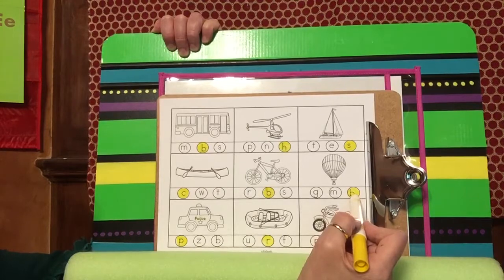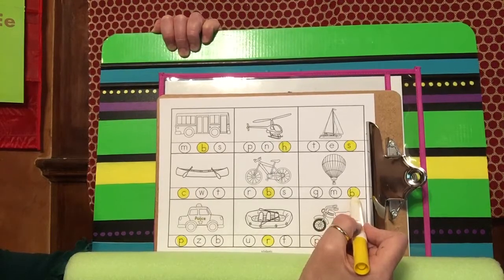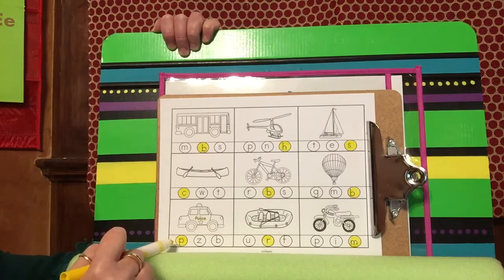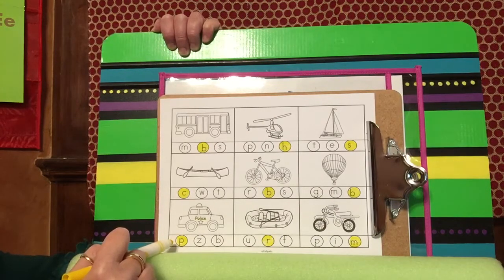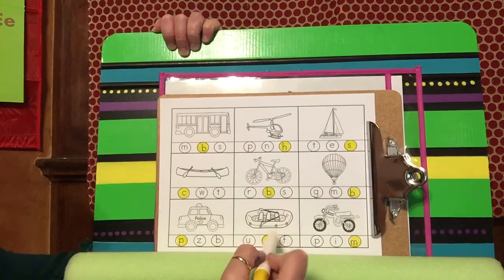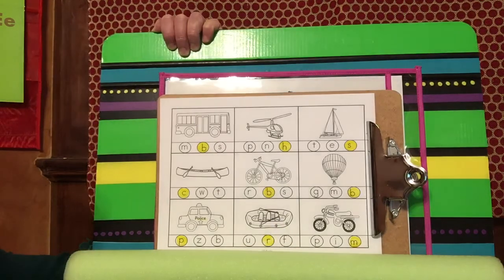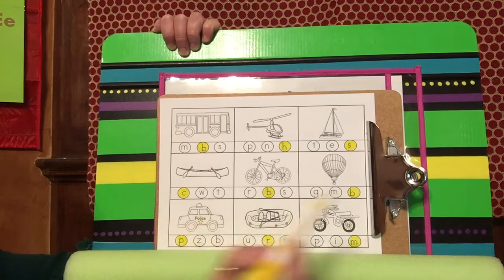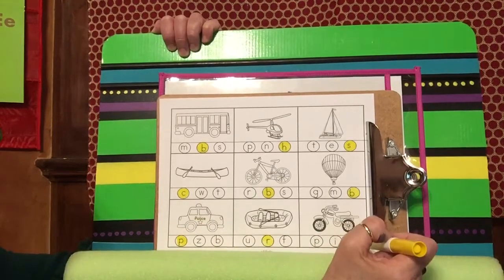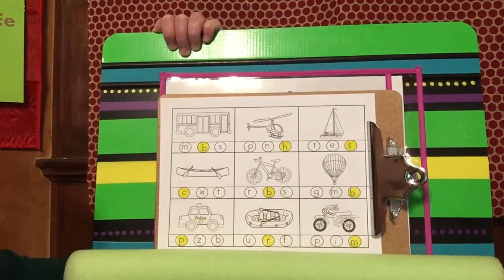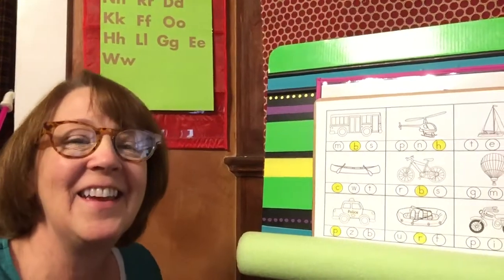Balloon starts with buh buh. Police car starts with this letter, and that one is P. Police. Remember what this one is? It's a raft and it starts with the rrr sound. Raft. And motorcycle starts with mmm. Motorcycle starts with an M. That was a good job, friends.